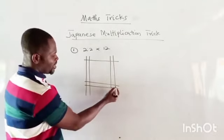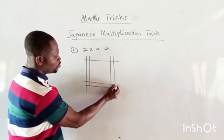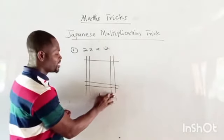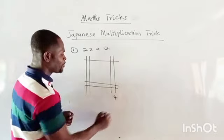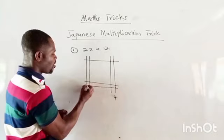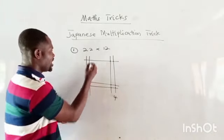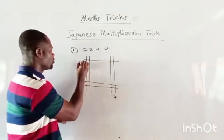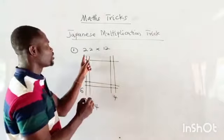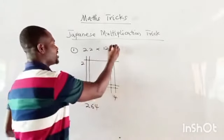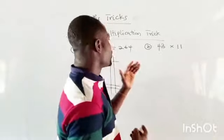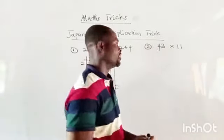Counting from the top down, we have one, two, three, four lines, and then the meeting points on the lines. We have four here, then one, two, three, four, five, six, and one, two — so our answer is 264. So 22 times 12 is equal to 264.